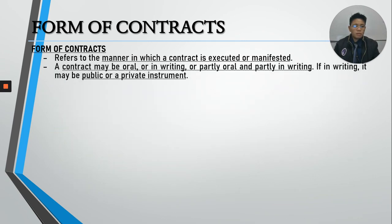A contract may be oral, it may also be in writing, or may be partly oral and partly written. If a contract is in writing, it may be a public instrument or a private instrument. All writings are private instruments. If you want the instrument to become public — meaning it is binding on the entire world because it has publicity — you need to have it notarized.